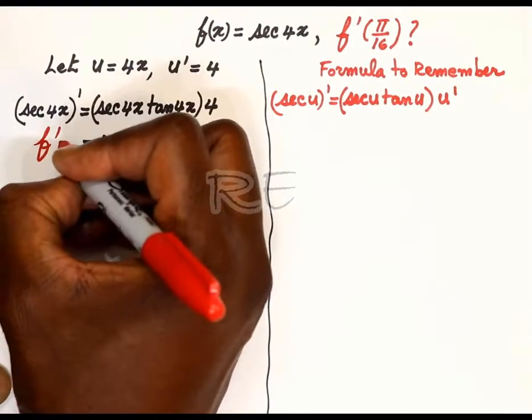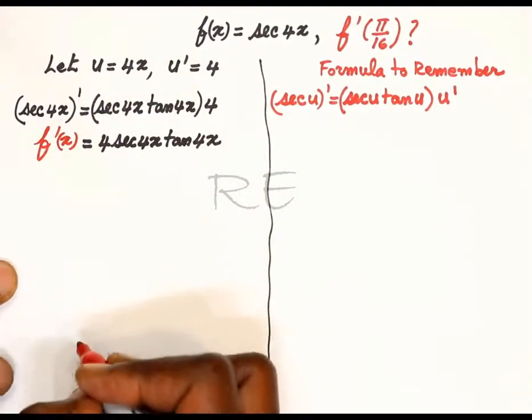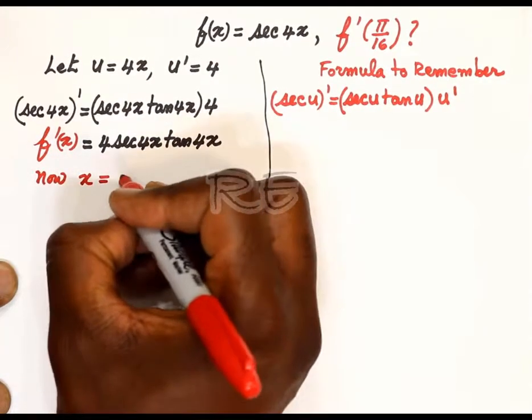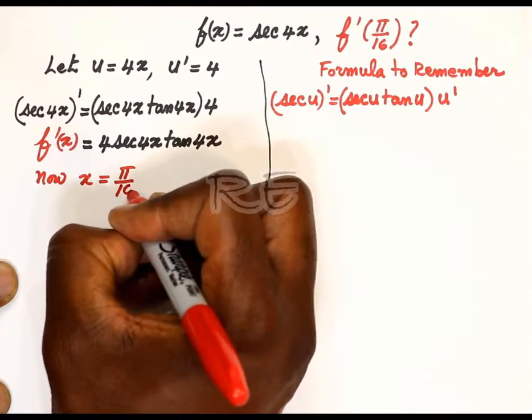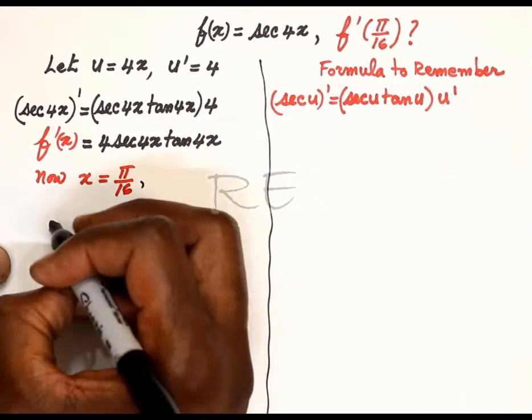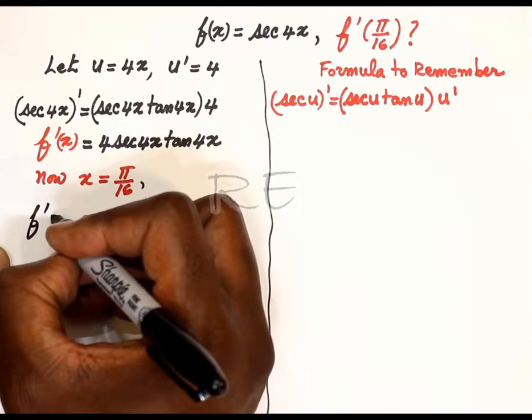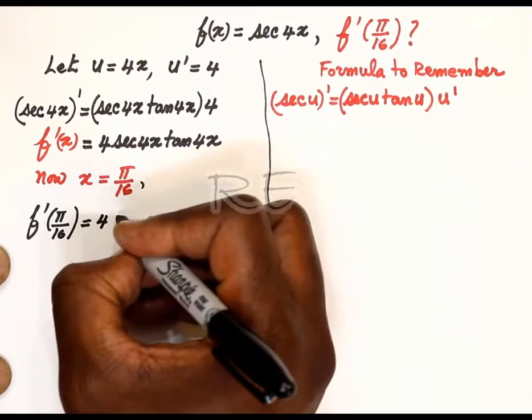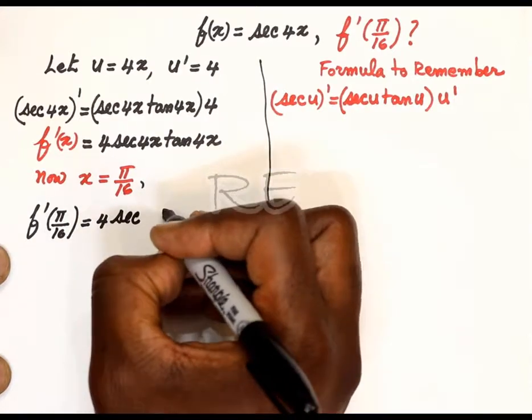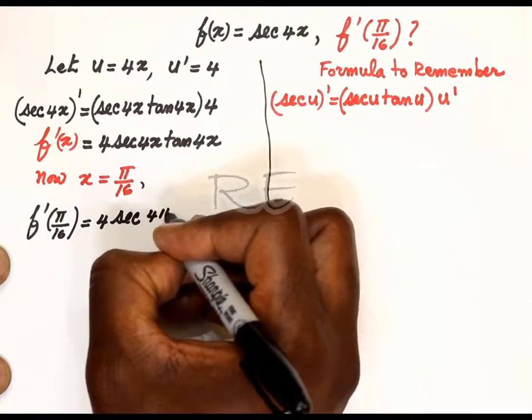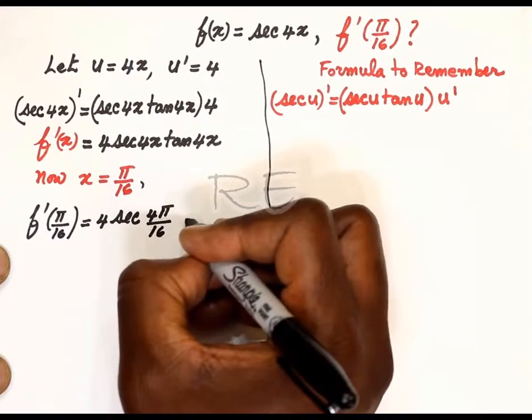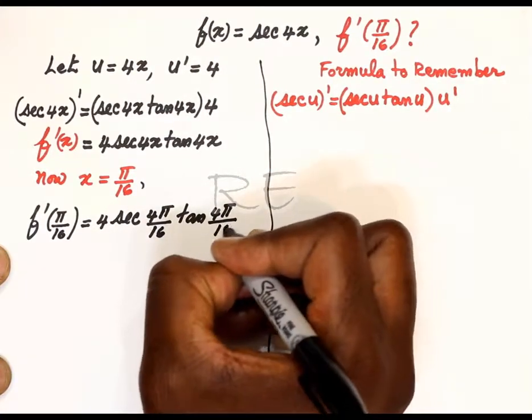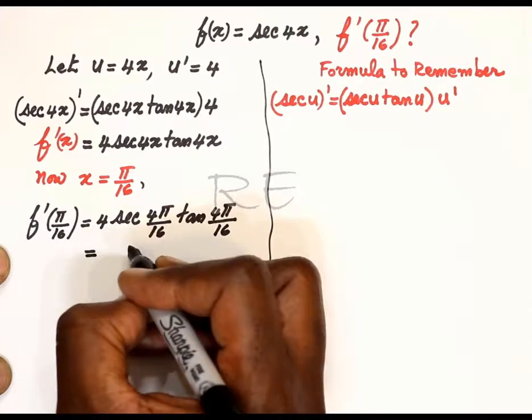Now x is equal to pi over 16. f prime of pi over 16 will be 4 secant 4 pi over 16 multiplied by tan 4 pi over 16.